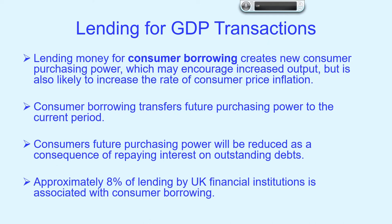Consumer borrowing transfers future purchasing power into the current period, which means consumers have more money now. However, in the future their purchasing power will be reduced as they need to repay both the capital and interest on their outstanding debts. This creates risks for an economy because people will have less purchasing power in the future as a consequence of bringing it forward into the present. Approximately 8% of lending by UK financial institutions is associated with consumer borrowing.